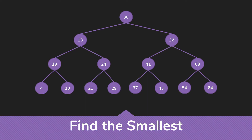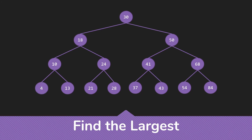Another thing we might be interested in is finding the smallest value in the tree — we simply start at the root and head left. So we head to the 18, then to the 10, and finally to the 4. There's no further left we can go, so the 4 is the smallest element. Similarly, to find the largest element, we start at the root and head right — getting to the 50, to the 68, and finally to the 84, which is the largest element.